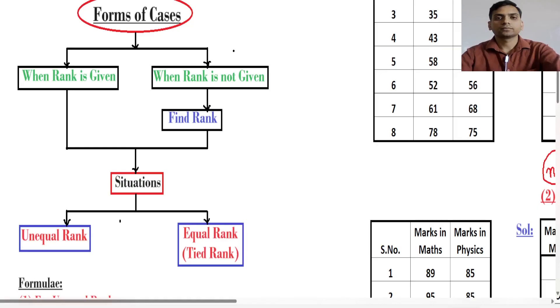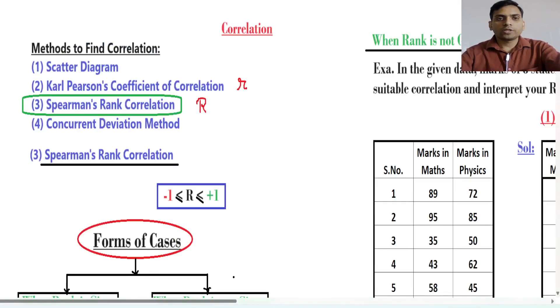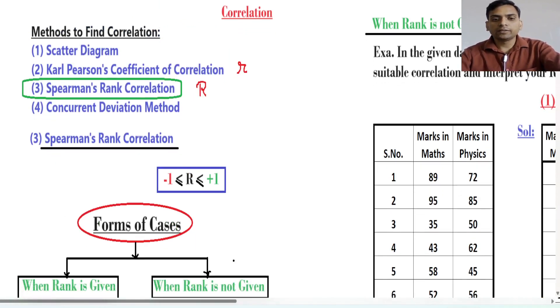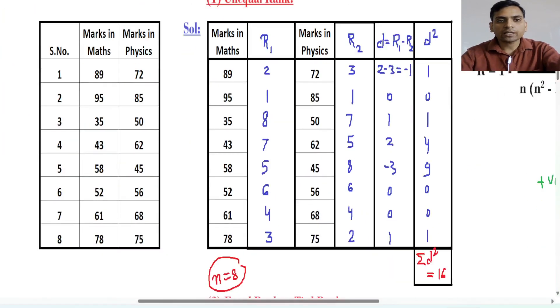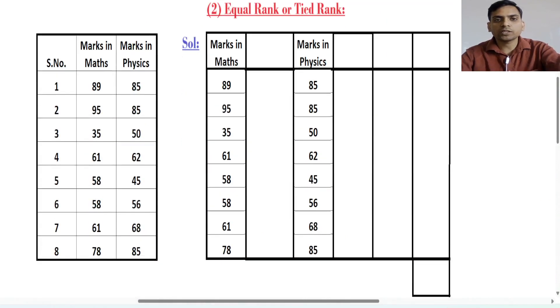Hello everyone. In the last lecture I taught Spearman rank correlation for unequal rank. Now in this lecture we will see Spearman rank correlation for equal rank. In the last lecture I explained the concept of Spearman rank correlation R and we solved a question when rank is not given for unequal rank. Now we will solve a question when rank is not given and this is the case of equal rank or tied rank.